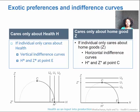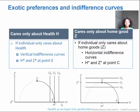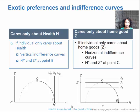There are some exotic preferences and indifference curves out there — not that they're common, but they're theoretically possible and help us understand what these curves mean. If a person only cares about their health, they want to be at exactly point E. In this case we have perfectly vertical utility curves, because all you're doing is picking an H value. U1 represents the maximum utility point, so H* would be at E and Z* would be at 0.